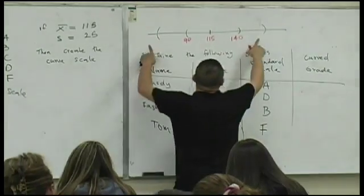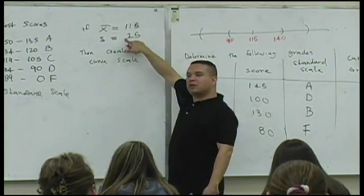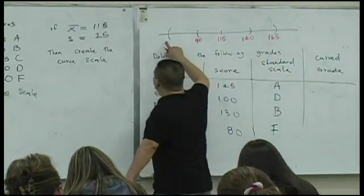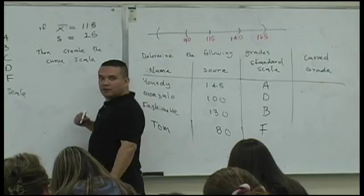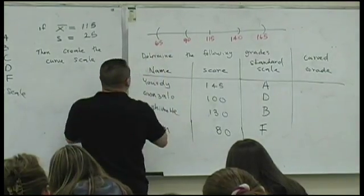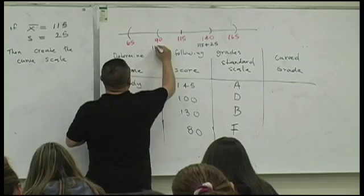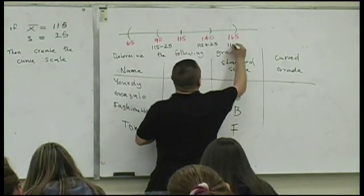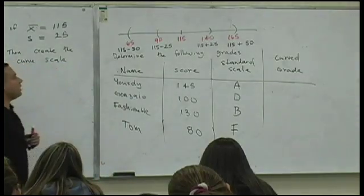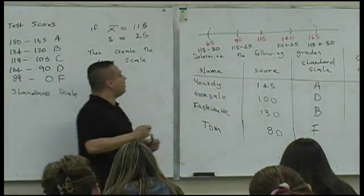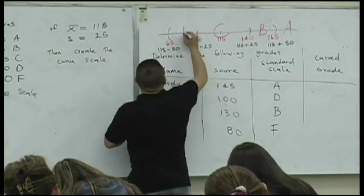And then these values here — it's 115 plus twice the standard deviation. Is that 165? What's 115 minus 50? 65. I want to point this out so you guys know where this comes from. This is 115 plus 25, the standard deviation. 115 minus 25, the standard deviation. This is 115 plus 50, twice the standard deviation. 115 minus 50, twice the standard deviation. We're creating the curve scale, where the center is where all the C's live, and then the B's, A's, D, and all the F's.